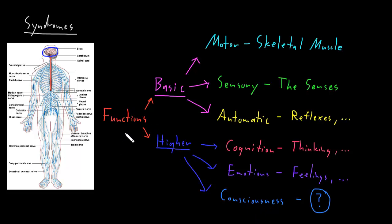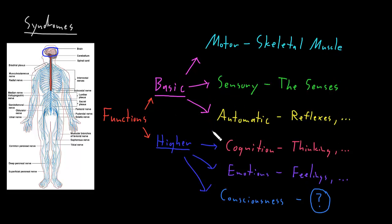So this is how I like to think about the functions of the nervous system and break them up into big categories. We'll go into the details of lots of these categories in later videos. If you look in different textbooks, you'll see people have organized the functions of the nervous system in many different ways — in some ways it doesn't really matter how you organize them, as long as you find a system that makes sense to you.